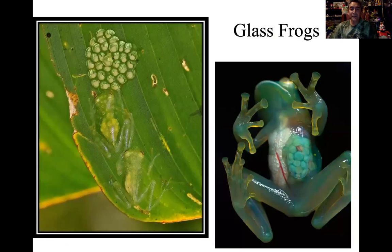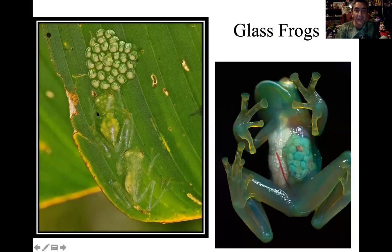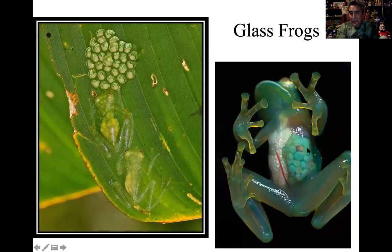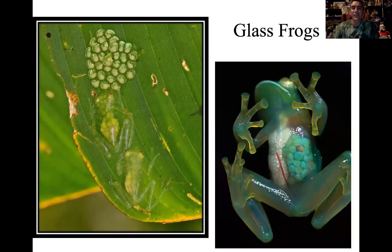Another form of cryptic coloration: the best way to look like your background is to be clear so all you see is the background. Here we have glass frogs — centrolenids — which are basically translucent. Light passes through them and you can see their internal organs. These ones have laid eggs, and they have a really neat defense strategy against predators targeting the eggs. Really good camouflage.